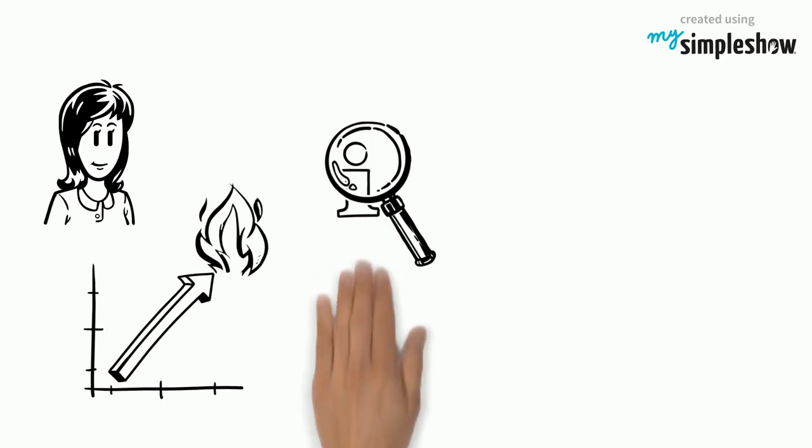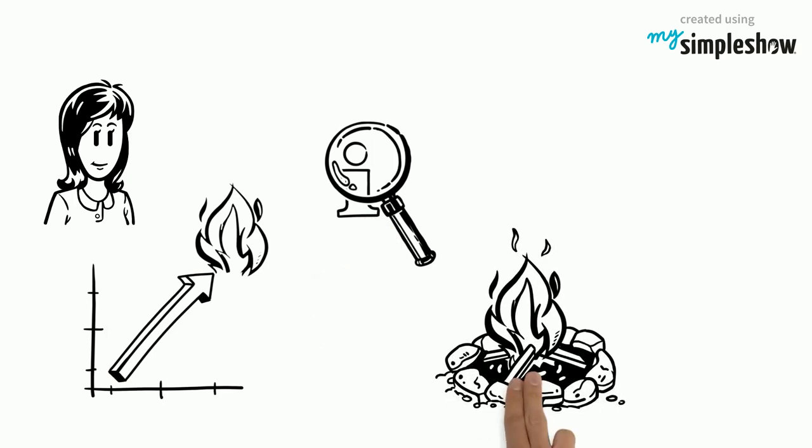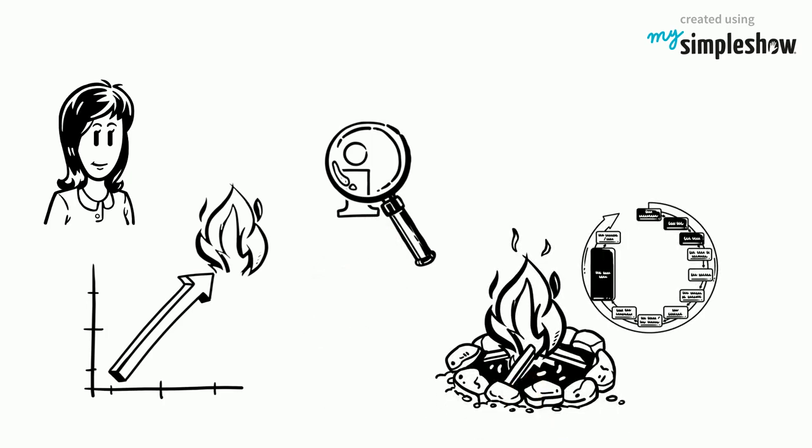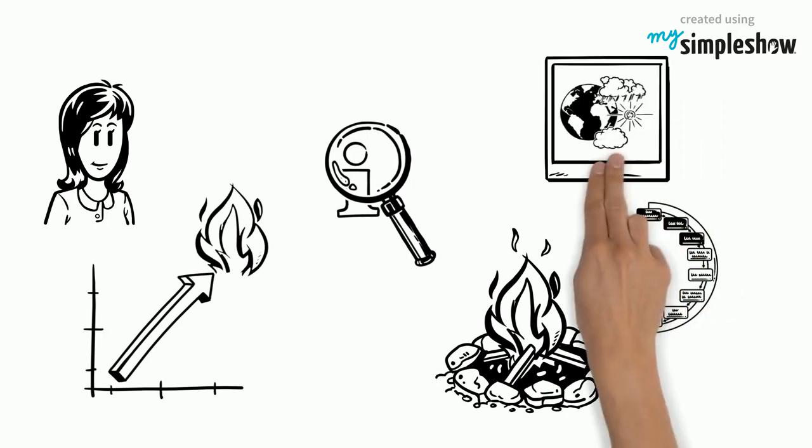Haley learns that there was an increase in fires at the campsite and it completely changed the balance of the ecosystem over time. She does research on the issue and sees that her campsite has some of the same characteristics as many places that have been affected by climate change.